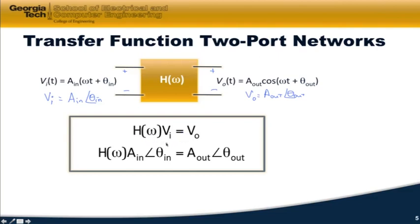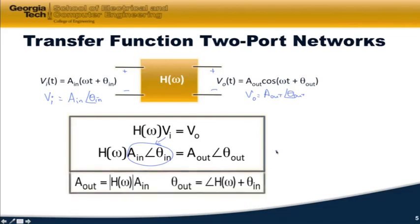So in terms of phasors, I just substitute in for the phasor here. This whole thing is the phasor. And over here, the output, everything here is the phasor form of the output. Now, if I do that, I can take the magnitude of both sides and the angle of both sides. So if I take the magnitude of both sides of this,